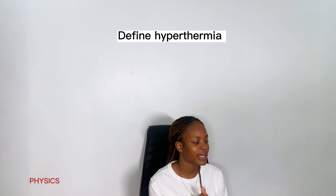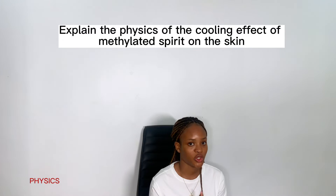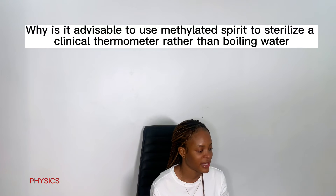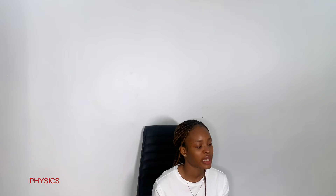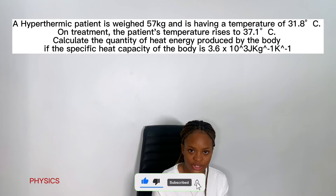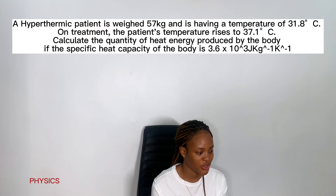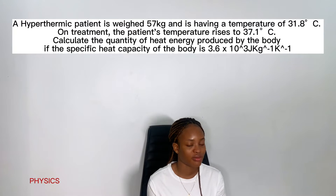Question 2: define hyperthermia. Enumerate four ways a nurse can generate heat for a group of patients. Question BI: explain the physics of the cooling effects of methylated spirits on the skin. Question BII: a food supplement contains 6,455 calories — what is the energy in joules contained in that food? Question C: why is it advisable to use methylated spirits to sterilize a clinical thermometer rather than boiling water? A hyperthermic patient weighs 57 kg and has a temperature of 31.8 degrees Celsius. On treatment, the patient's temperature rises to 37.1 degrees Celsius — calculate the quantity of heat energy produced by the body.